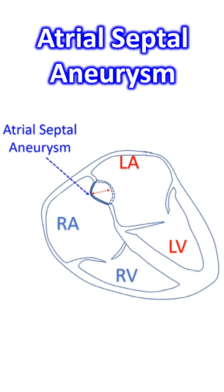Atrial septal aneurysm is an aneurysmal portion in the region of the fossa ovalis with a diameter of at least 1.5 cm, and having a movement amplitude of at least 1.5 cm or a protrusion of at least 1.5 cm.